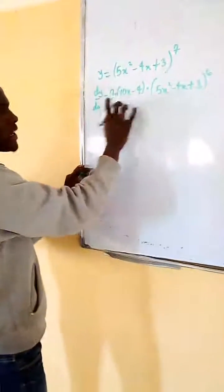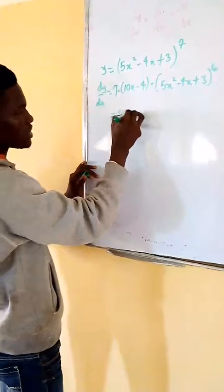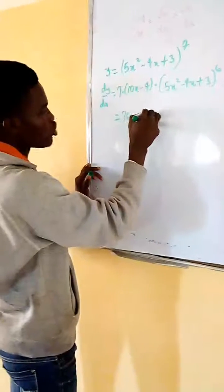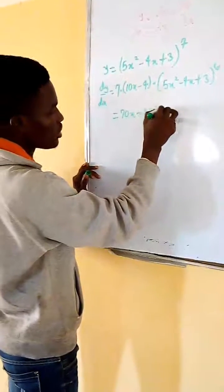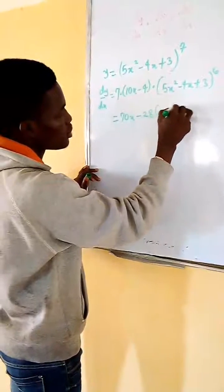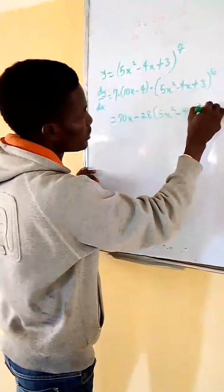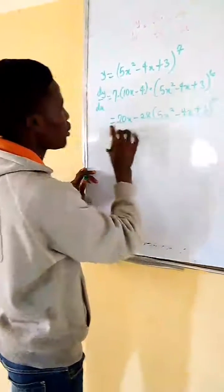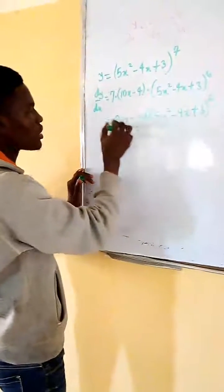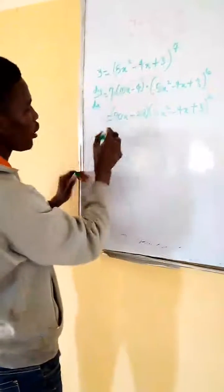So expand this bracket, that would be what? 70x - 28 into bracket (5x² - 4x + 3)^6. You know, this is together, so I'll put it in the bracket to avoid confusion.